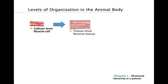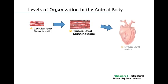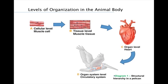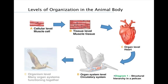The next level of organization is the tissue level, a network of cells working together to perform a common function. The organ level is a series of tissues grouped together to perform a specific task. The organ system level is comprised of various organs that perform a vital body function. The final level, the organism level, contains a number of organ systems all coordinated to work as a unit.